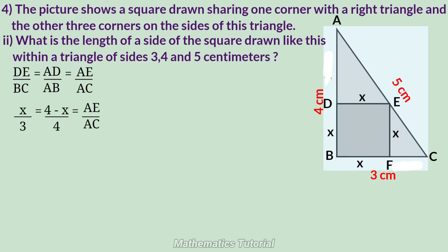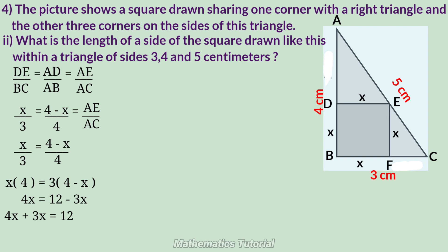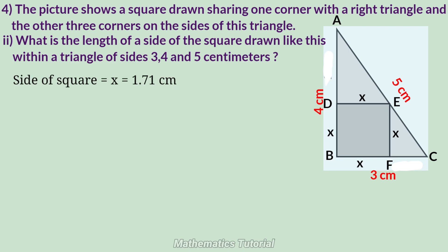So x/3 = (4−x)/4. Cross multiplying: 4x = 3(4−x), that is 4x = 12 − 3x. Adding 3x to both sides: 7x = 12, so x = 12/7, that is 1.71 cm. The side of the square is equal to x, that is 1.71 cm.